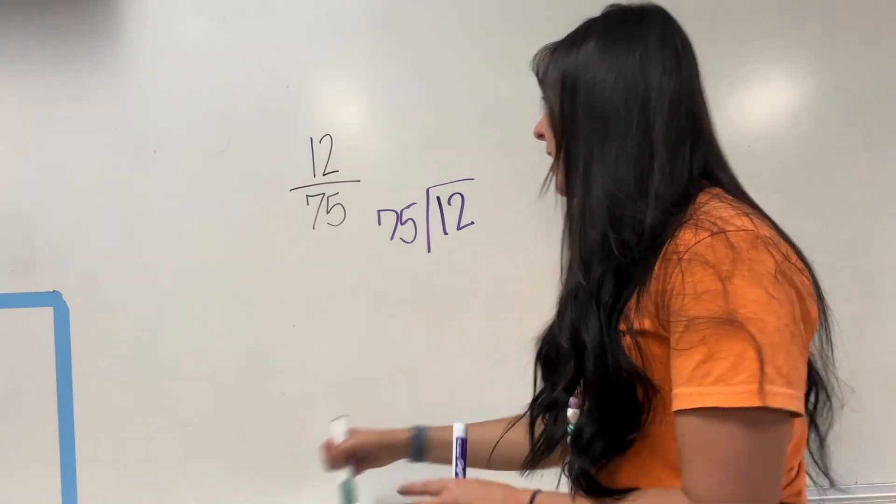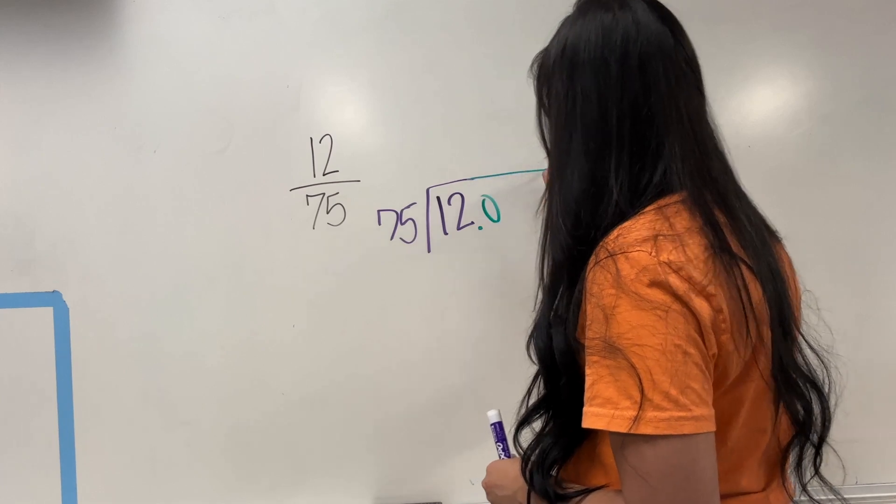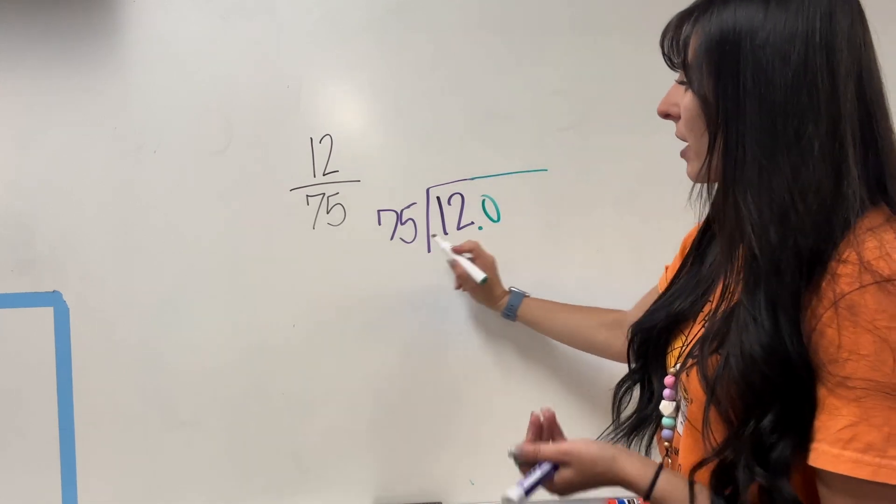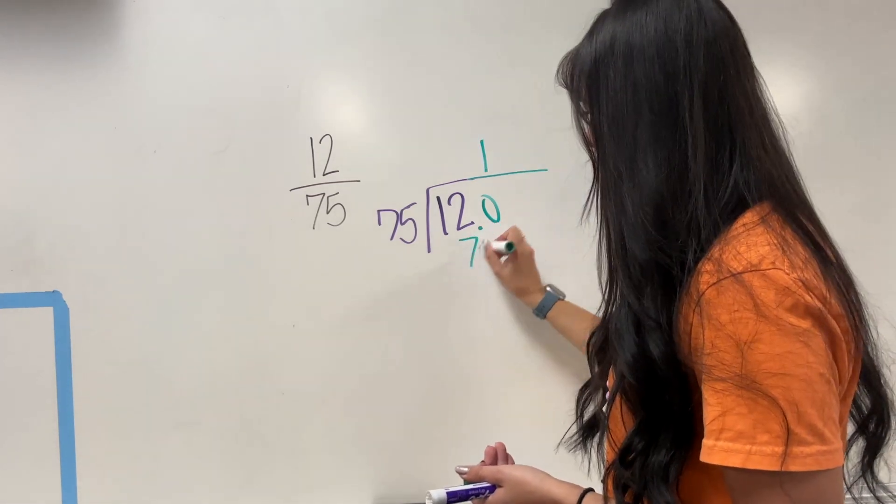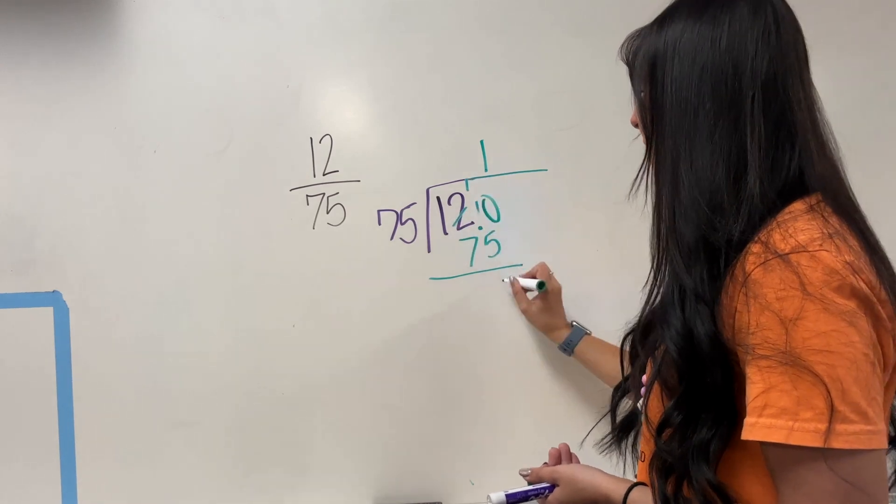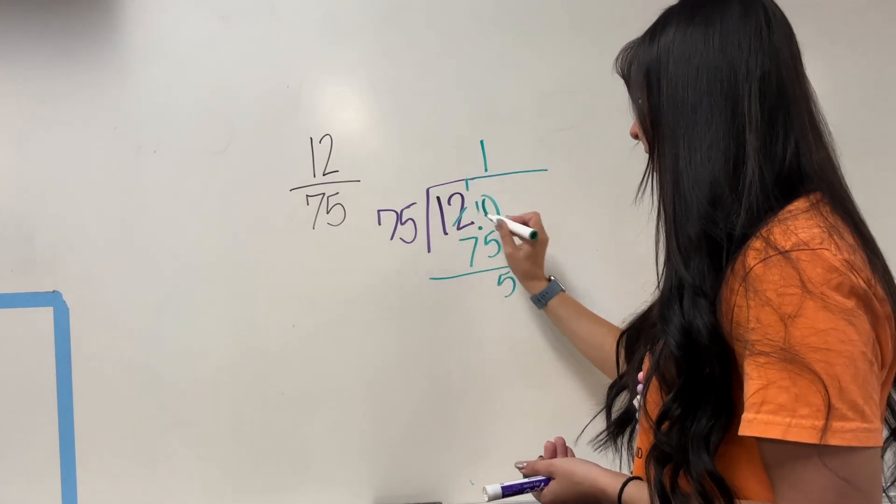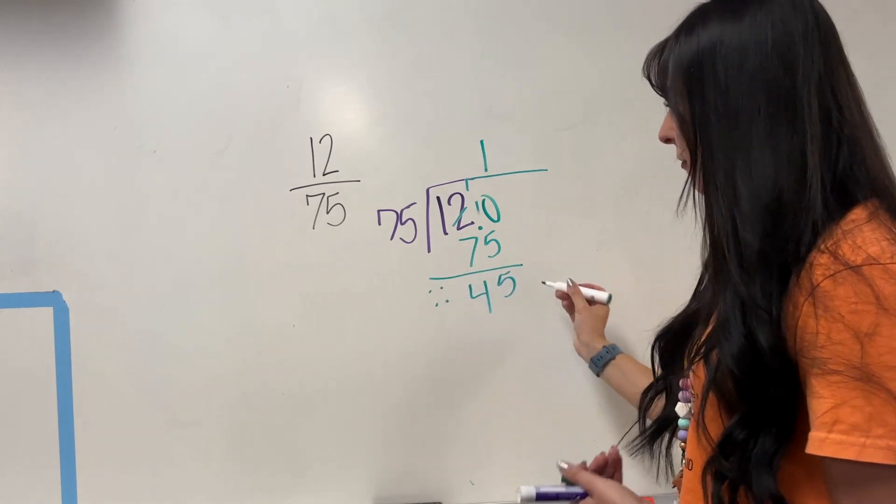I'm going to add a decimal and a 0 and carry on. So now how many times does 75 go into 120? Well, that's going to go in one time. That's going to give me 75. Subtract. Can't do that. That's a 10. 5, 11, 7, 8, 9, 10, 11. 4.